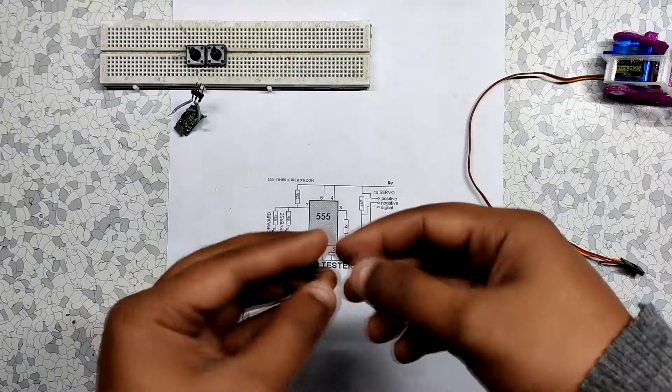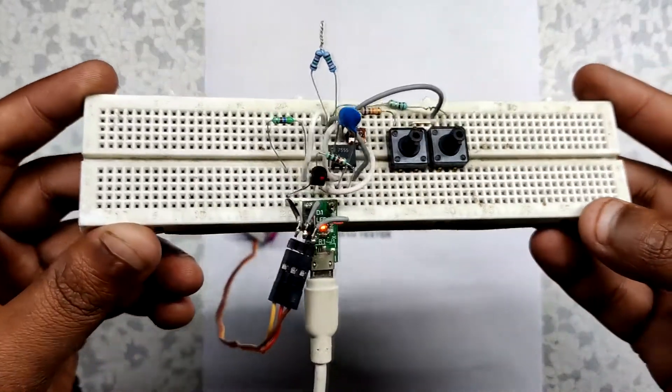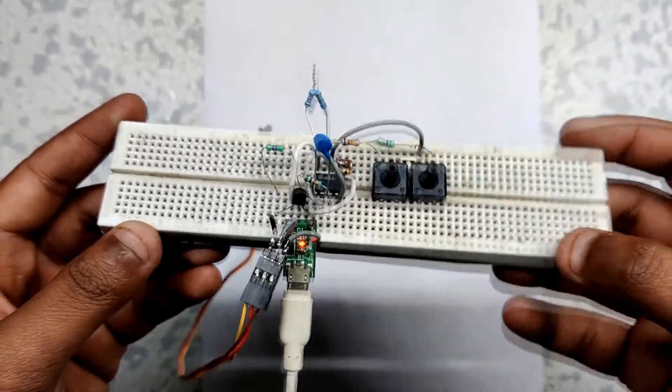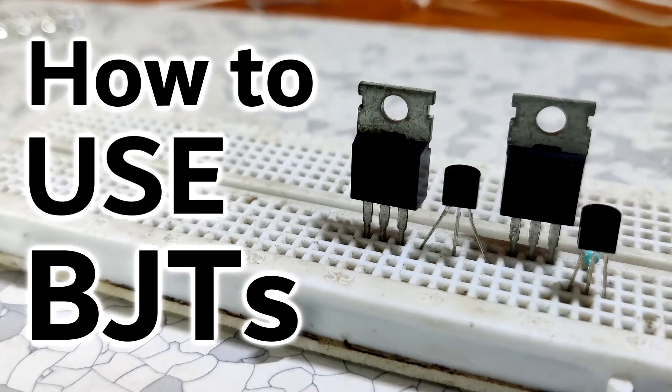Instead, I will be using a 555 timer IC with some general components like this NPN transistor and these resistances, along with a couple of capacitors. If you want to know more about transistors, watch this video of ours. And without any further ado, let's begin our video.